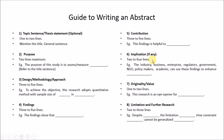For implications, two to four lines or sentences. For example: the industry, business, enterprise, regulators, government, NGOs, policymakers, academic marketers, or whoever can use those findings to achieve or enhance something — that is your implication. After that, originality or value: one to two sentences maximum — for example, 'This research is an eye-opener for...' And finally, limitation and future research — that's how we write limitations and further or future research.